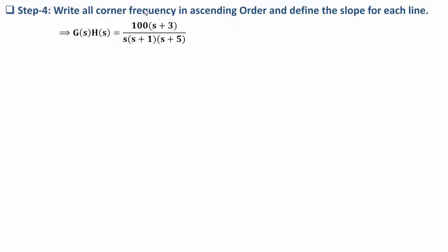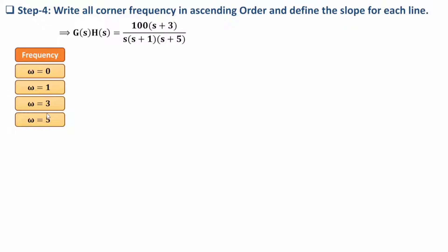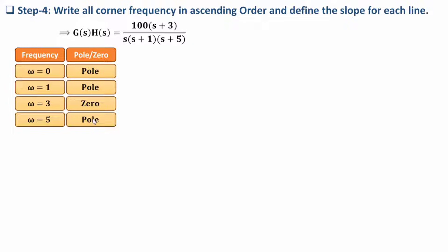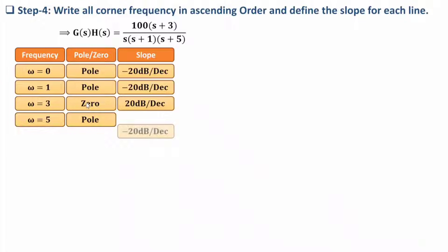Now we need to identify all corner frequencies. In this transfer function we have a zero at 3 rad/s, a pole at 0 rad/s, a pole at 1 rad/s, and a pole at 5 rad/s. We write all corner frequencies in ascending order: 0, 1, 3, and 5. Then we note whether each frequency is a pole or zero — we have one zero at 3 and the others are poles. With a single pole the slope change is −20 dB/decade and with a single zero it is +20 dB/decade.